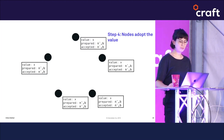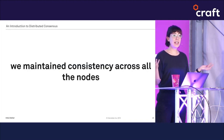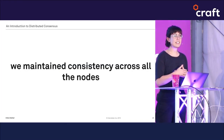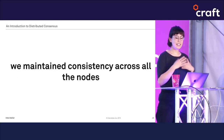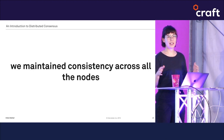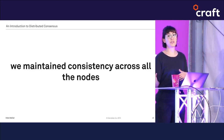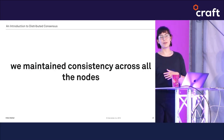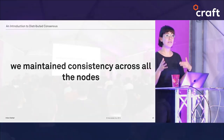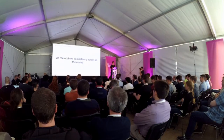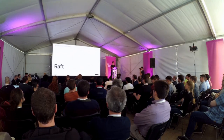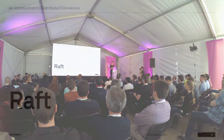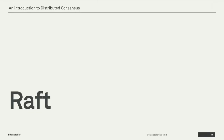Now proposer B can send out an accept command with the new value and all nodes will adopt that value. We've maintained consistency across all of the nodes. But the devil's in the details — there are lots of corner cases in these examples as well as entirely separate failure scenarios like network partitions. With Paxos out of the way, I'd like to turn back to Raft.